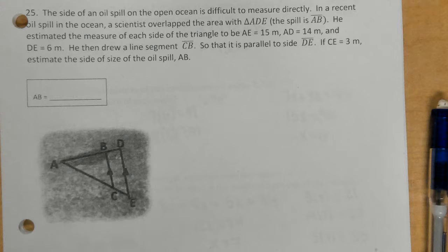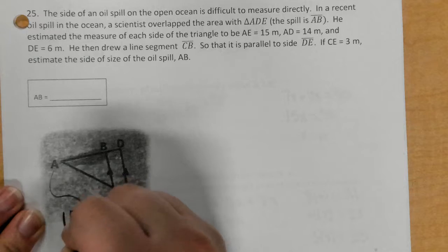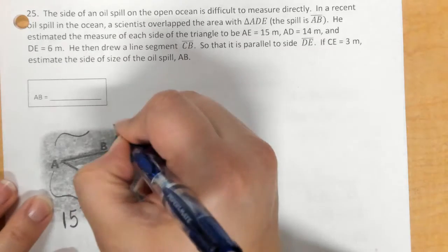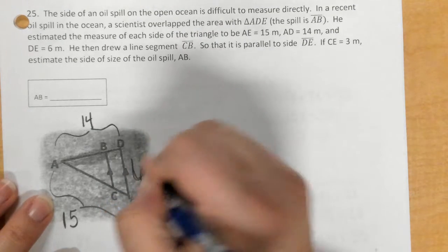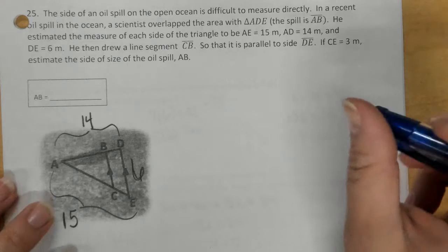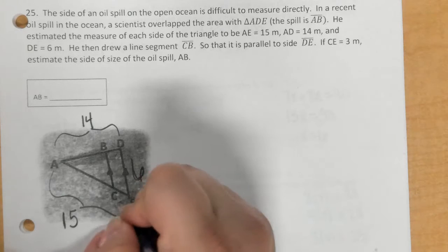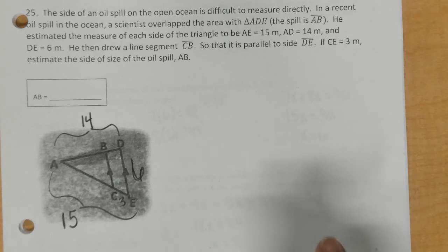He estimated that the measure of each side of the triangle to be AE is 15 meters. So, AE is 15. Then, AD is 14, and DE is 6. He then drew a line segment, CB, so that it is parallel to side DE. If CE is 3, so this is 3, estimate the size of the oil spill, AB.